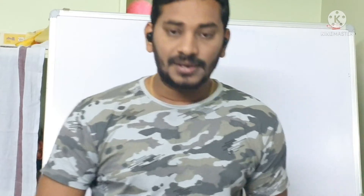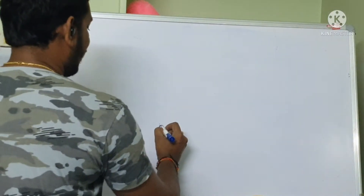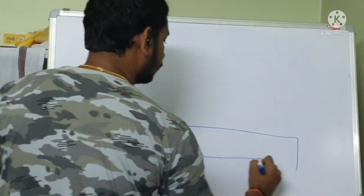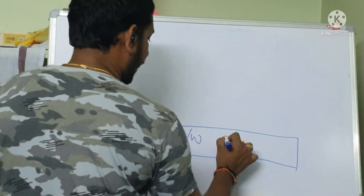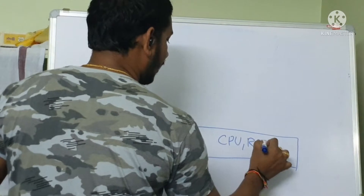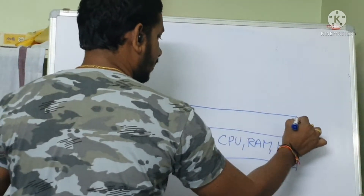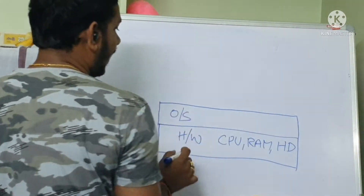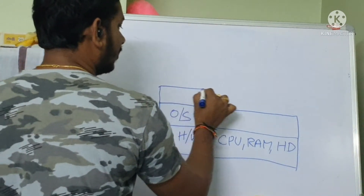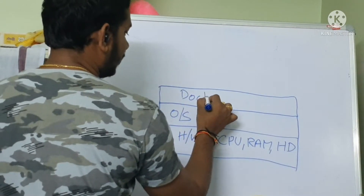Hi friends, welcome back to Techie Trainers. My name is Shivakumar Reddy. In our previous video we discussed the disadvantages of the virtualization approach. Now let us discuss the containerization approach and then the advantages over virtualization. Let us first draw the structure of the containerization approach. We will have hardware — CPU, RAM, and hard disk — and on top of it we will have some OS, and on top of that a Docker engine, which is just a software.